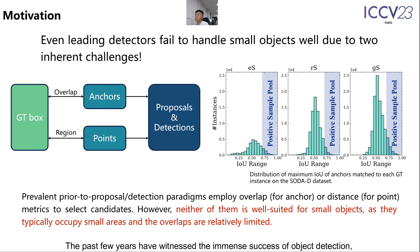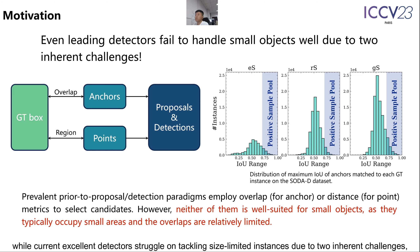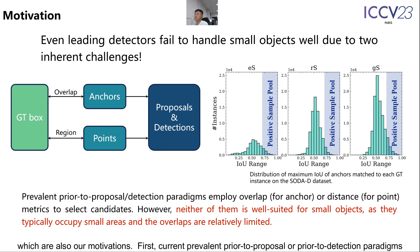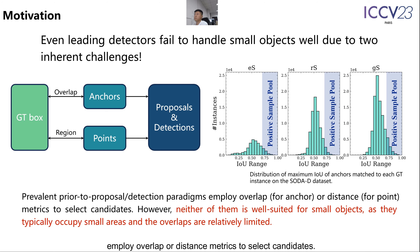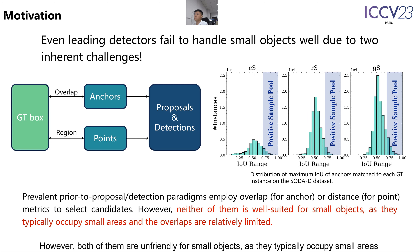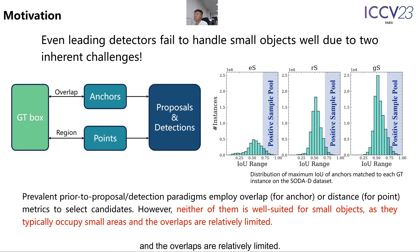The past few years have witnessed the immense success of object detection, while current excellent detectors struggle on tackling size-limited instances due to two inherent challenges, which are also our motivations. First, current prevalent prior-to-proposal or prior-to-detection paradigms employ overlap or distance metrics to select candidates. However, both of them are unfriendly for small objects, as they typically occupy small areas and the overlaps are relatively limited.